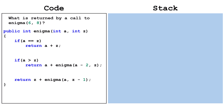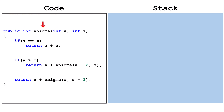Let's look at this recursive problem. If you want, you can pause the video and solve it. The method enigma has int parameters a and z. If a and z are equal, we hit a base case and return a plus z.